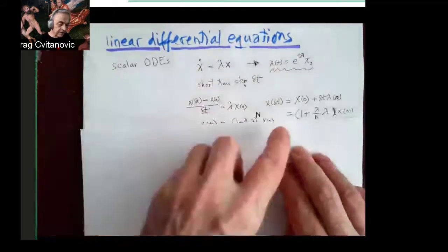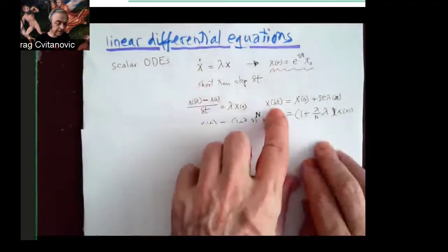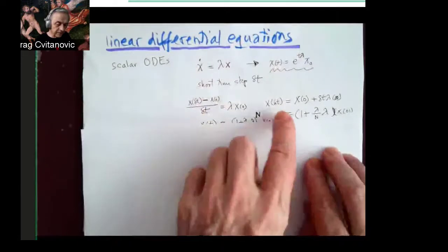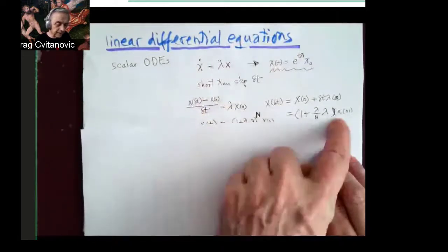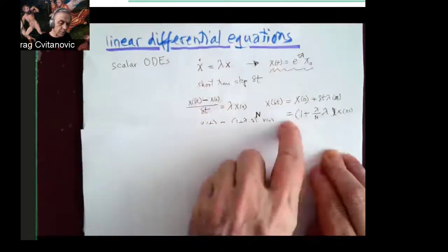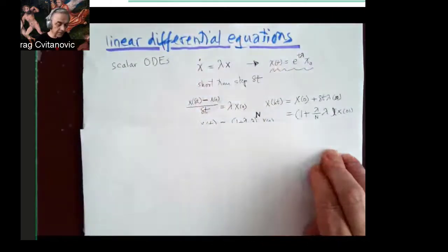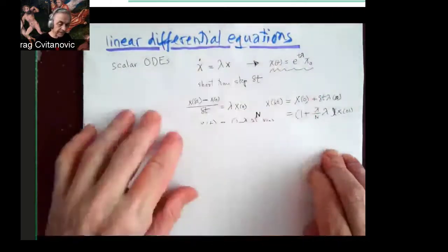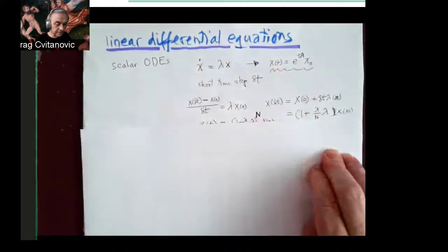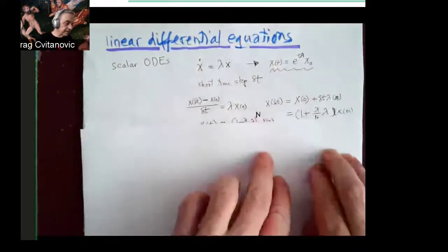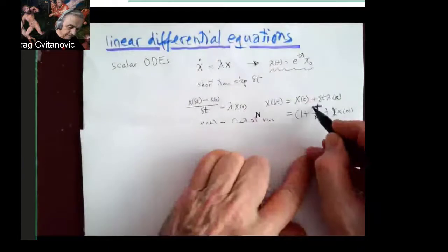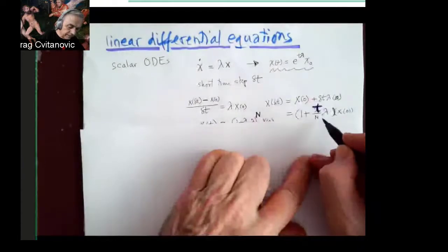This being linear means that X delta T time later is the initial X times 0, multiplied by this small difference from 1, because lambda divided by large integer n is a small number, and this is a constant T divided by n, of course.